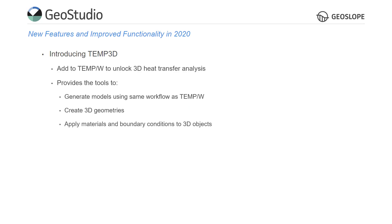The Properties window provides easy material and boundary condition definition directly to three-dimensional objects. The finite element mesh is generated with a single click, and users can easily interpret the three-dimensional results with contours, 3D vectors, isosurfaces, and graphs.